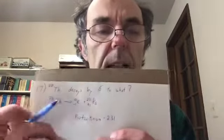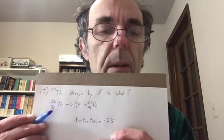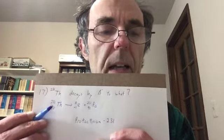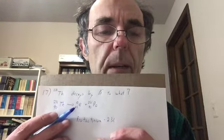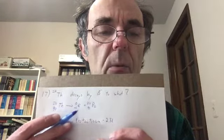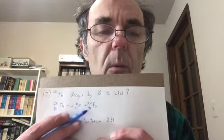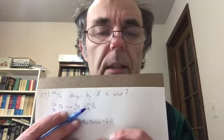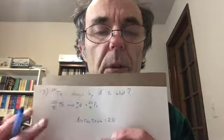Problem seventeen: Thorium-231 decays by beta-minus — what does it decay into? Thorium is element 90, A=231. Beta-minus ejects an electron (charge −1, mass 0), so Z increases from 90 to 91, A stays 231. Element 91 is protactinium (Pa), so the product is protactinium-231. You don't need to memorize elements — look them up in the appendix or periodic table.